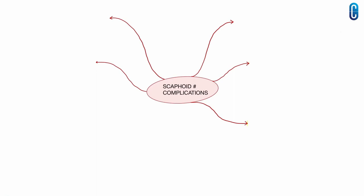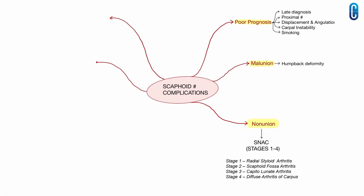We come to the end of our discussion regarding complications of scaphoid fractures. To recap: the poor prognostic factors were late diagnosis, proximal fracture, displacement and angulation, carpal instability, and smoking. Malunion leads to humpback deformity and DISI. Nonunion is defined by failure to heal after 6 months, and the stages of SNAC are: stage 1 radial styloid arthritis, stage 2 scaphoid fossa arthritis, stage 3 capitolunate arthritis, and stage 4 diffuse arthritis of the carpus.